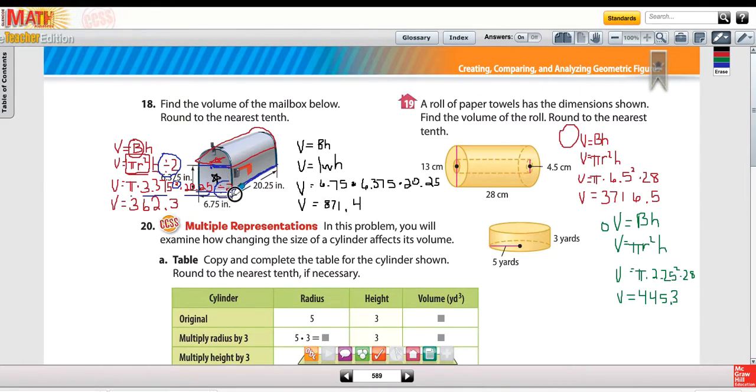Don't forget that you're gonna have to divide it in half because it's not a full cylinder up here, it's only half a cylinder, and you should get for the volume of that half cylinder 362.3.